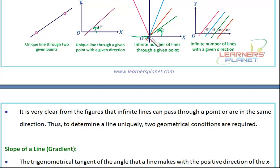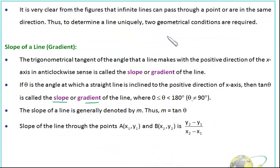Suppose you wish to find the slope of a line. The slope should be calculated from the positive side of the X-axis, going anticlockwise. If you take it from the other side it will be less than 90 degrees, and the calculation of slope will be wrong. So you have to take the direction from the positive side of the X-axis and the direction should be anticlockwise — that's really important. The slope of a line is generally denoted by M, and M is tan theta.